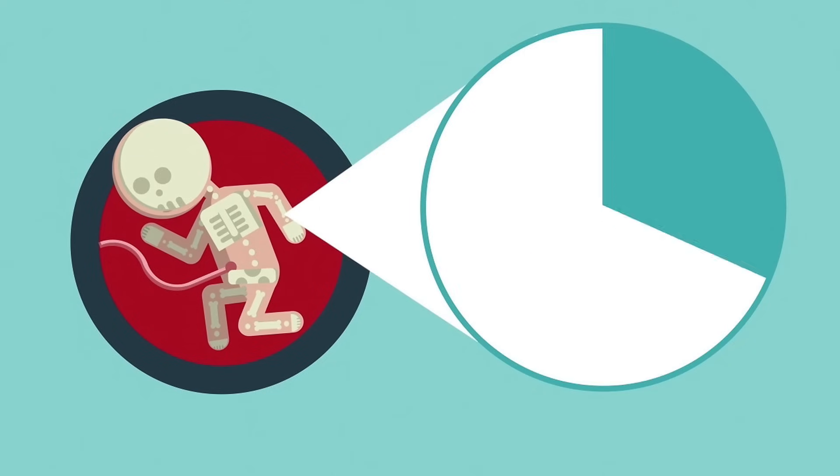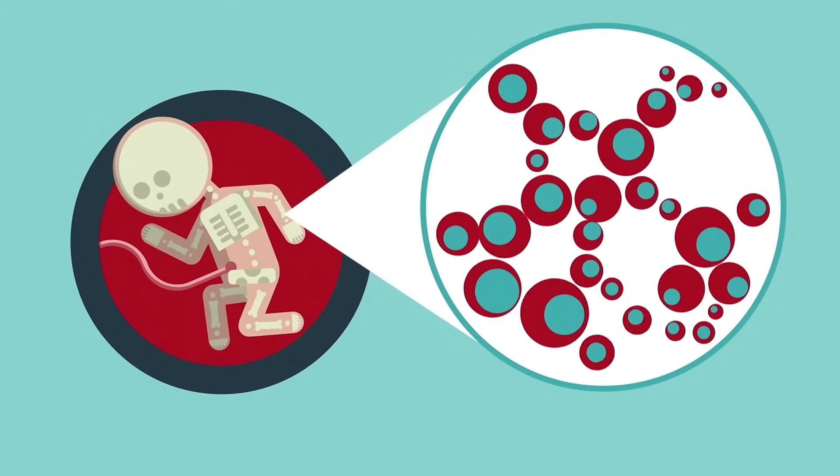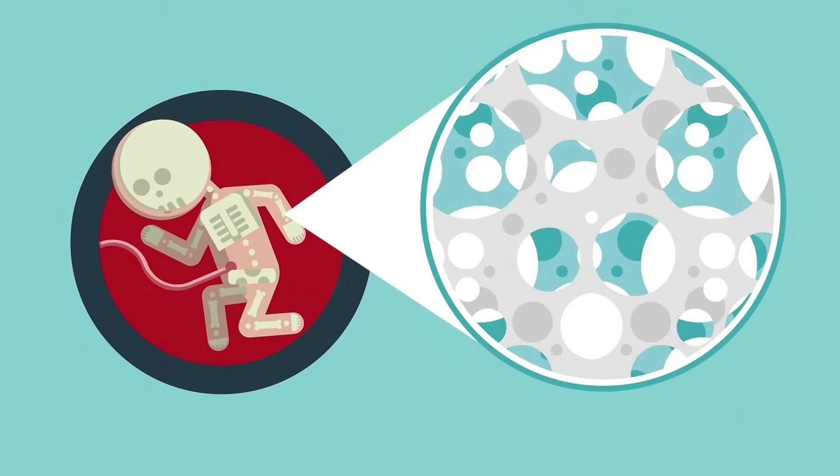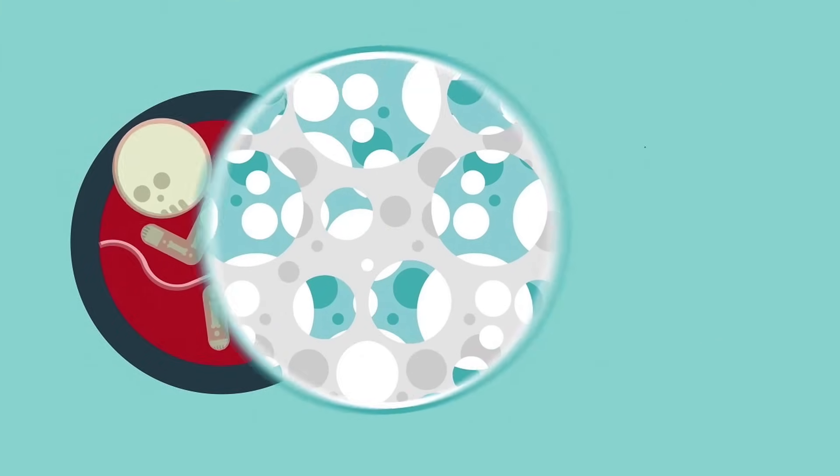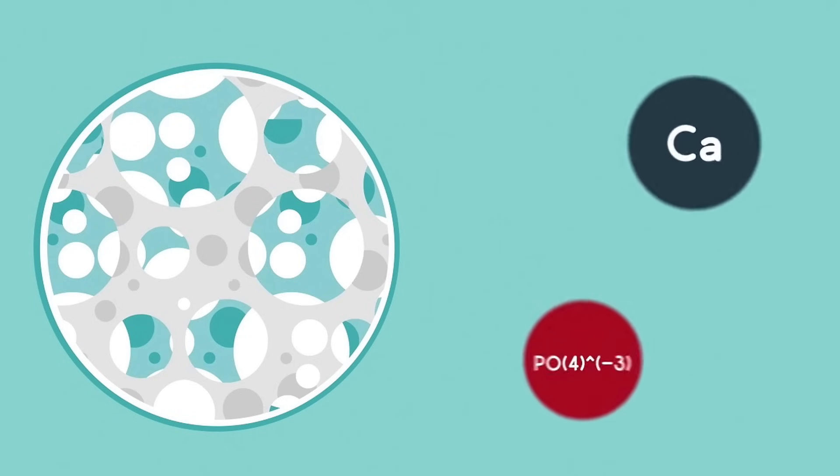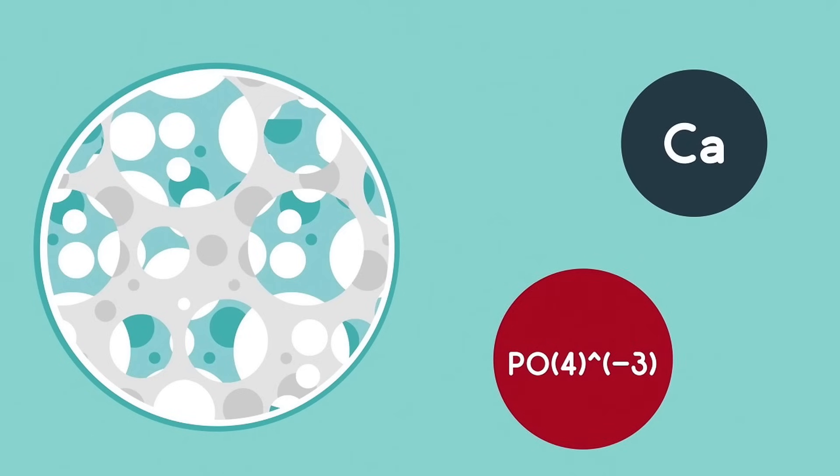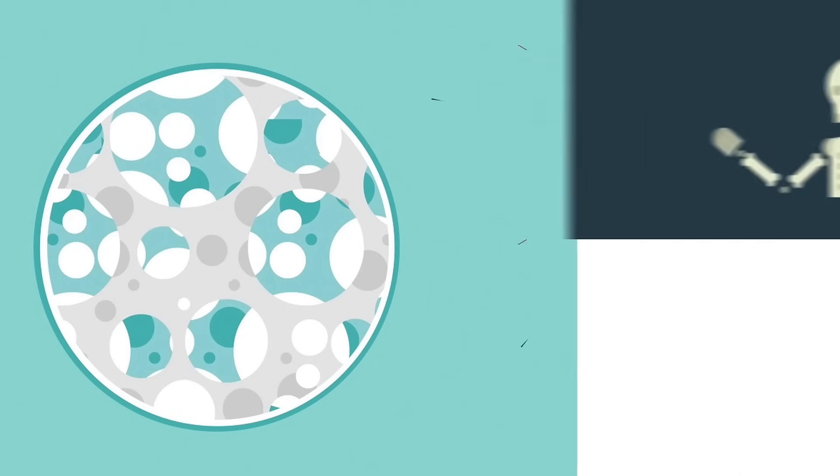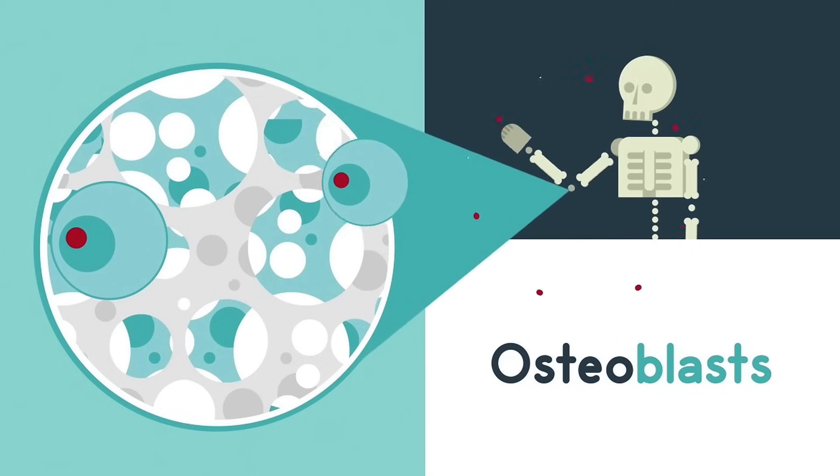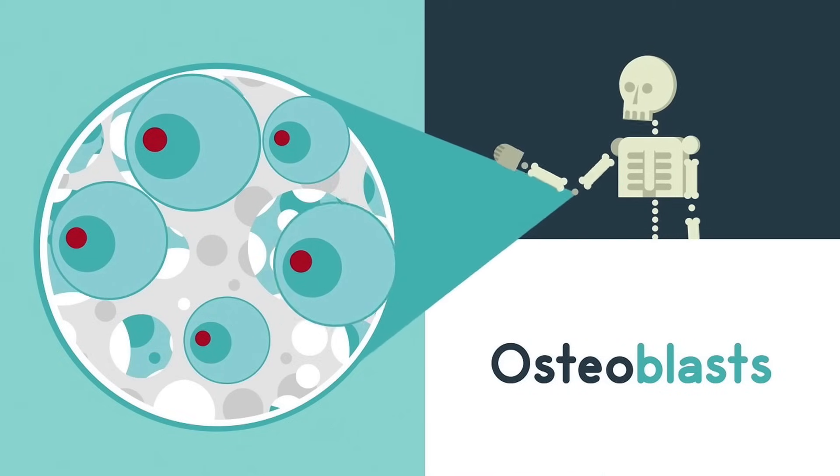Most bones start in a growing fetus as a soft, flexible cartilage. Bone-forming cells replace the cartilage with a spongy mineral lattice made of elements like calcium and phosphate. This lattice gets harder as osteoblasts, which are specialized bone-forming cells, deposit more mineral, giving bones their strength.